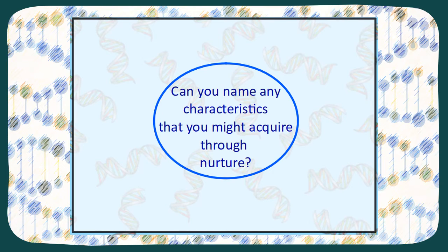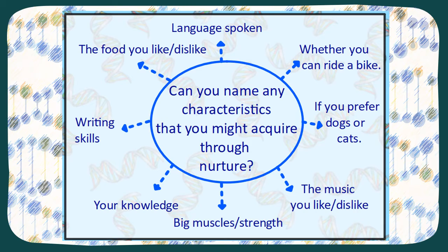These are some characteristics you may acquire through nurture: the foods you like and dislike, the language you speak — because what language you speak is not in your DNA — whether you can ride a bike, if you prefer dogs or cats, the music you like or dislike, big muscles and strength (even if you've got a strong parent, you have to build those muscles yourself), your knowledge, and any skills like doing wheelies on your bike or kickflips on your skateboard.